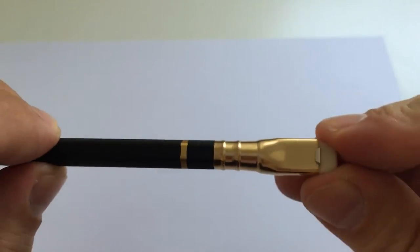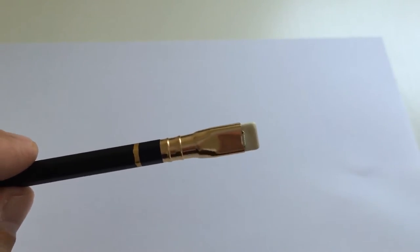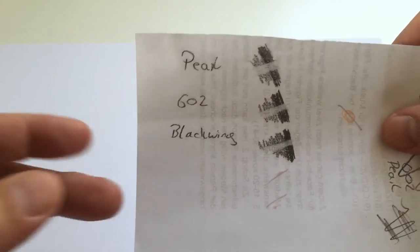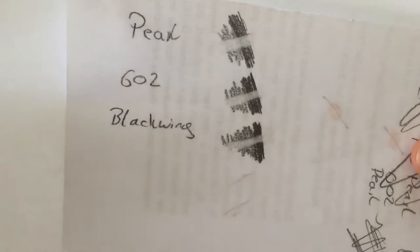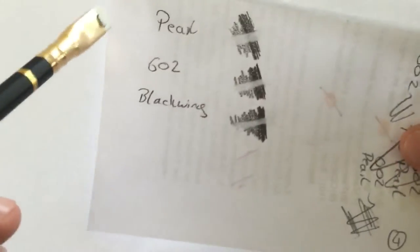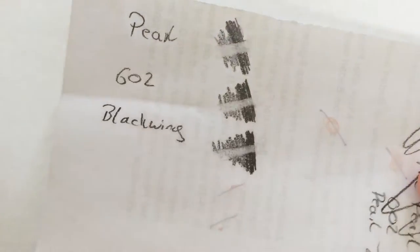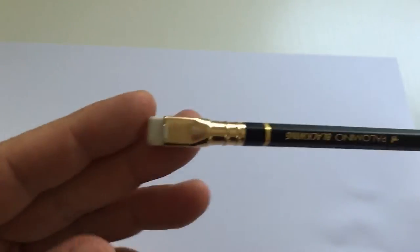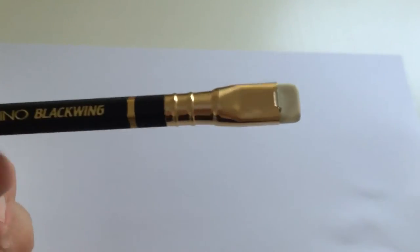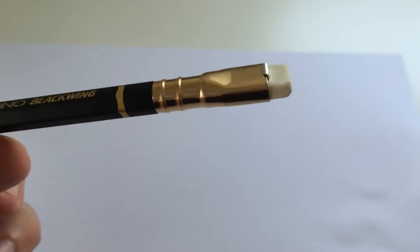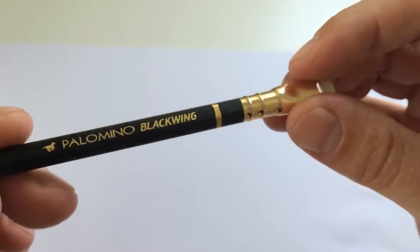The eraser works all right I have to say. I tried the eraser of the Pearl, the 602, and the regular Blackwing here. They perform all right, they are usable, but it's not a great eraser. Most people carry erasers with them anyway, so the eraser is probably just sort of an emergency thing to use. However, the pencils are quite expensive, so it could maybe be good to have a slightly better eraser at the price point of those pencils.